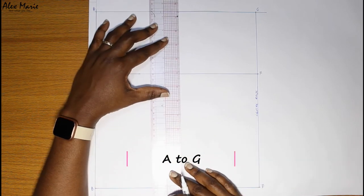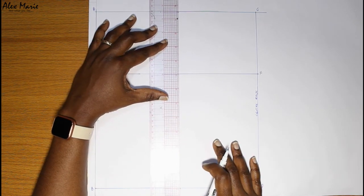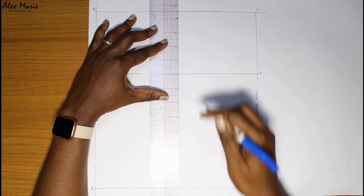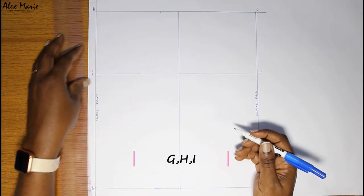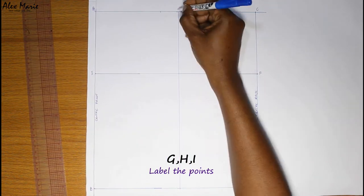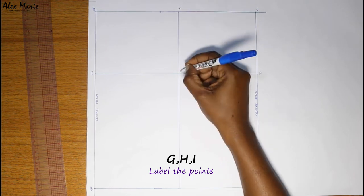And then you just square down, and we label accordingly G, H, and I.